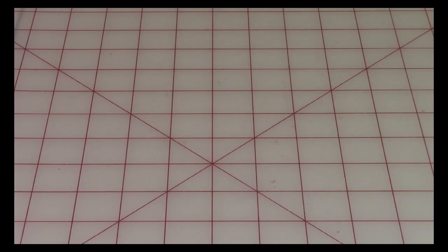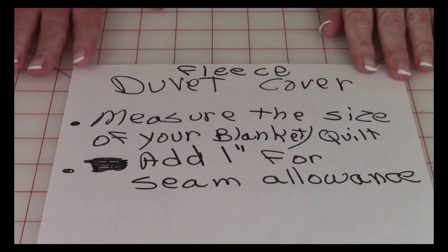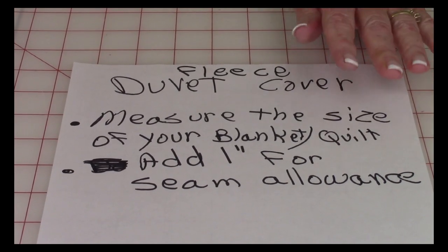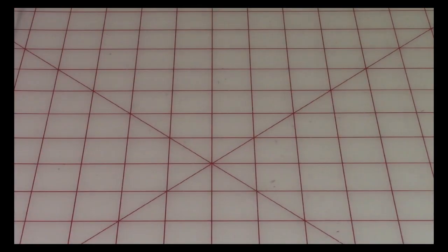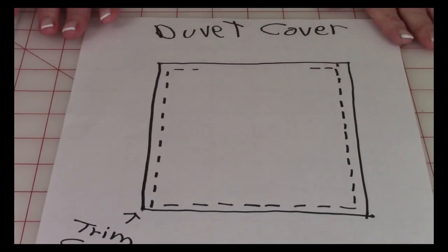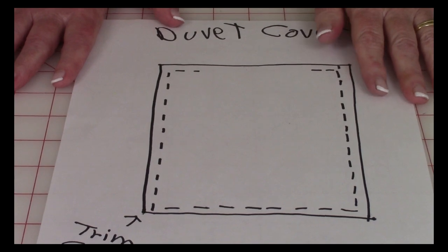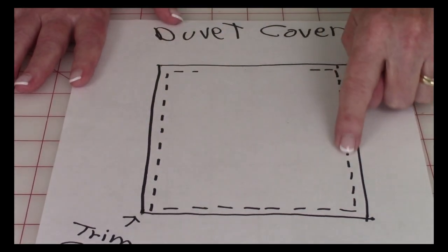Now for the fleece duvet cover, they recommend that you take your current bed cover you're using and measure it and add one inch for seam allowance. Then to put it together...